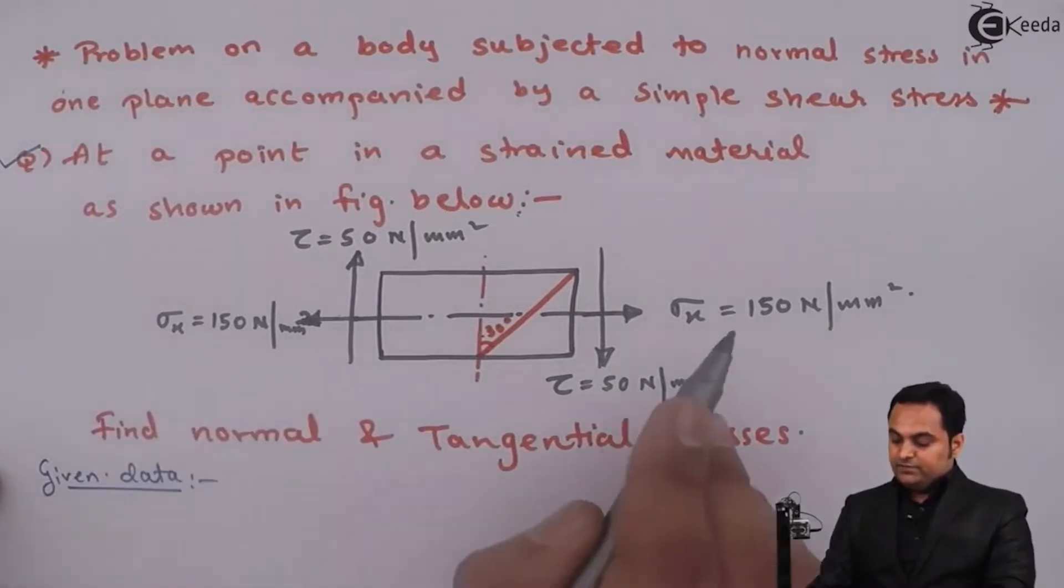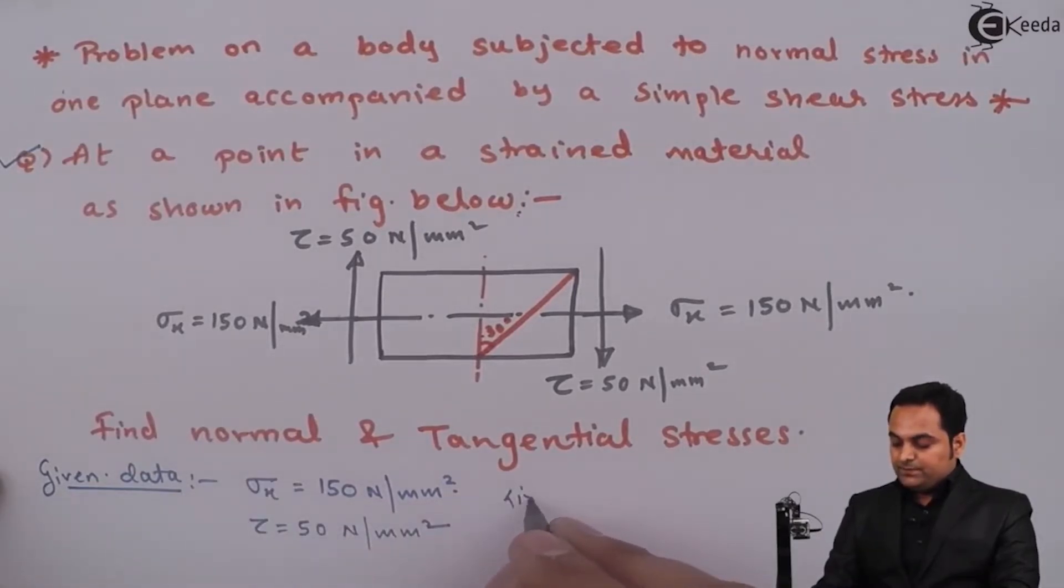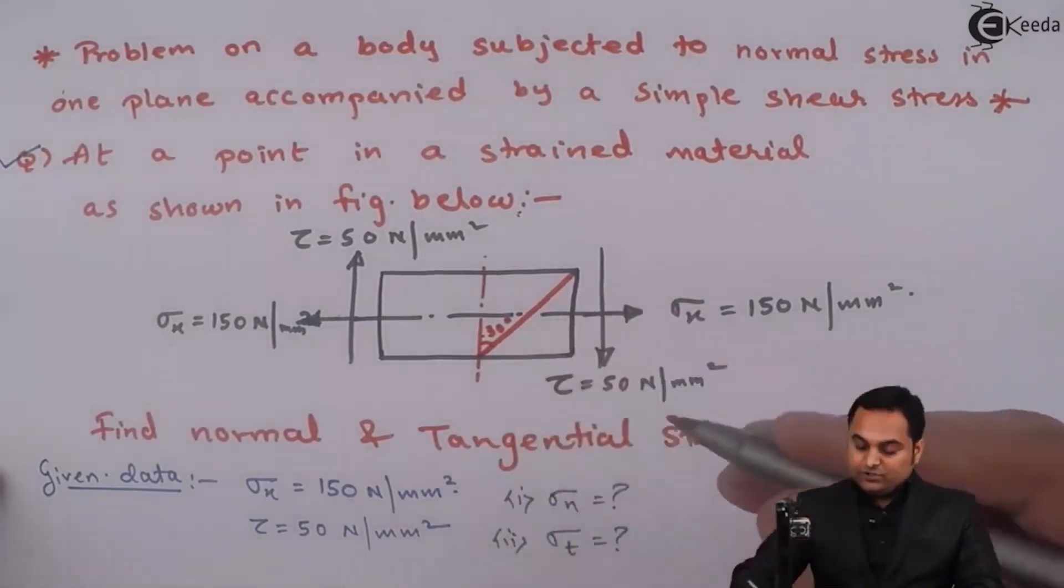First is sigma x equals 150 Newton per mm square, tau shear stress 50 Newton per mm square. We have to find normal stress which is sigma n and tangential stress sigma t.